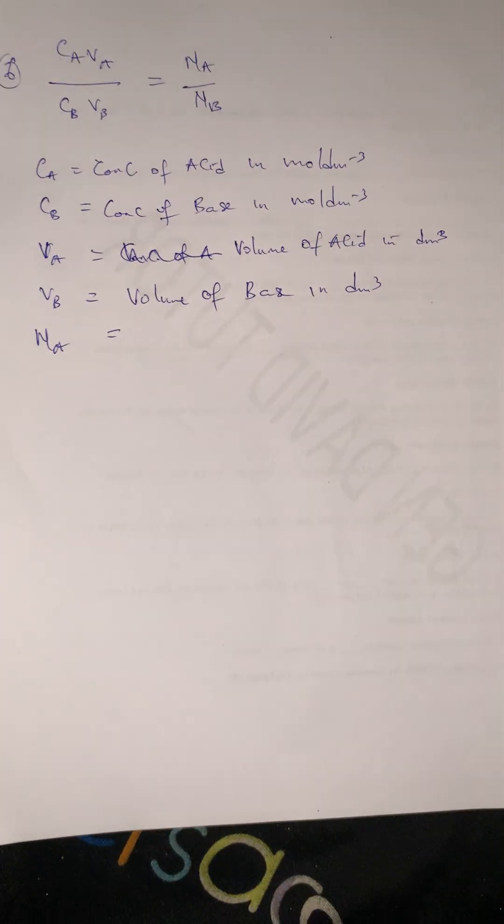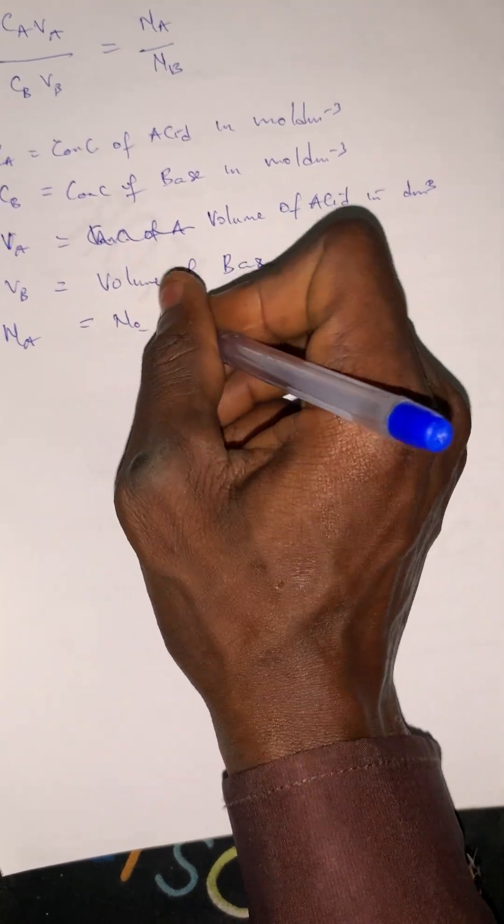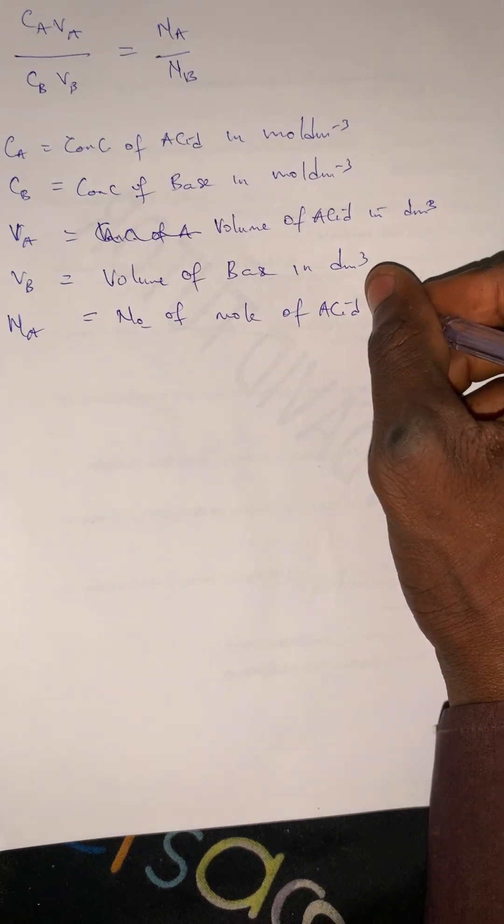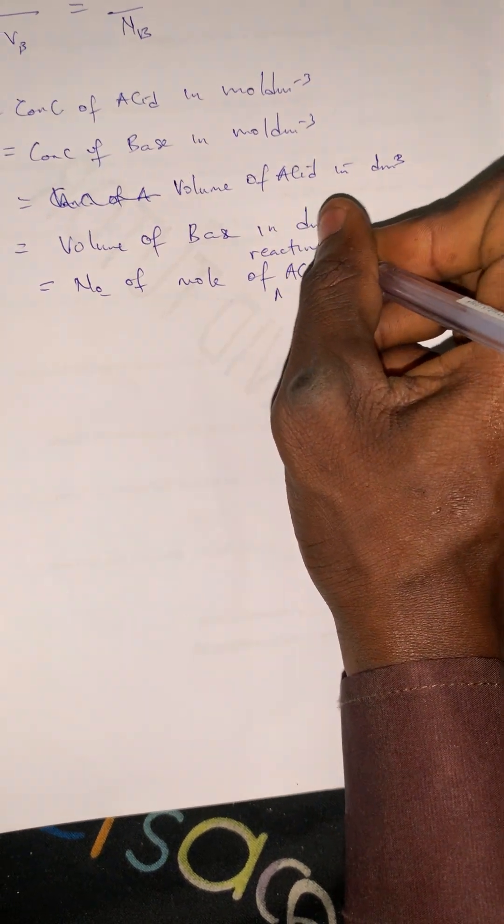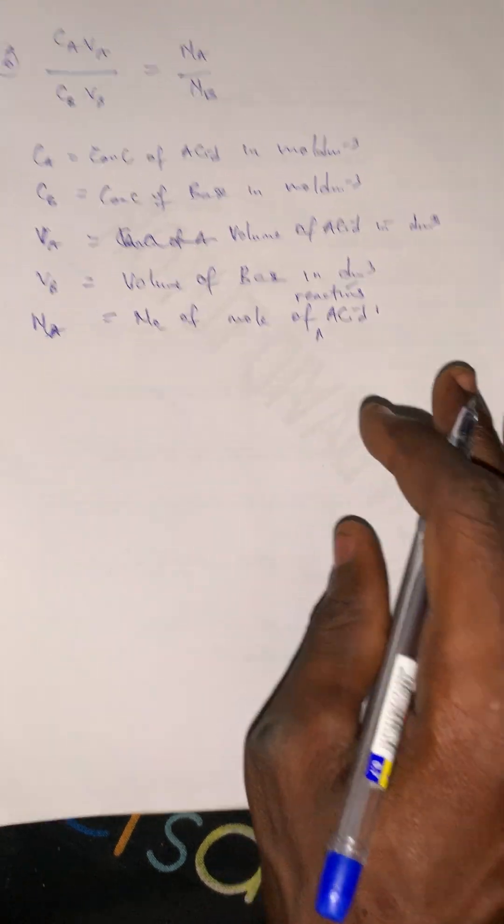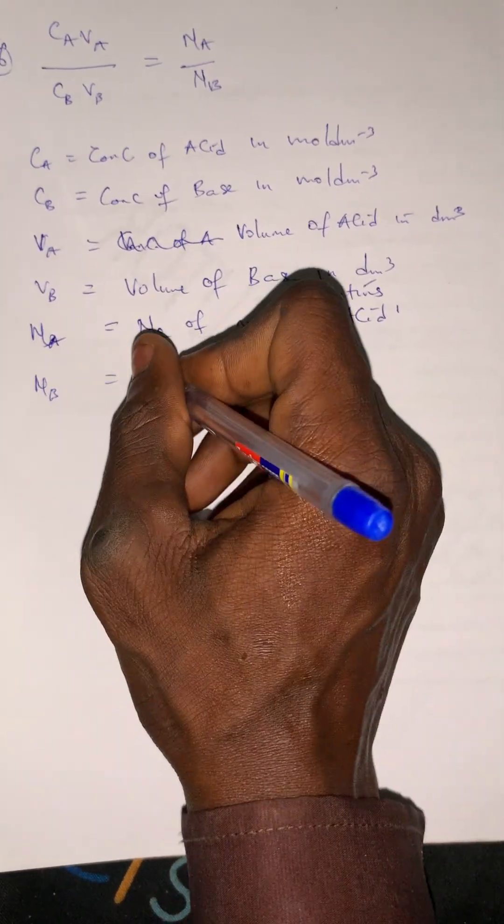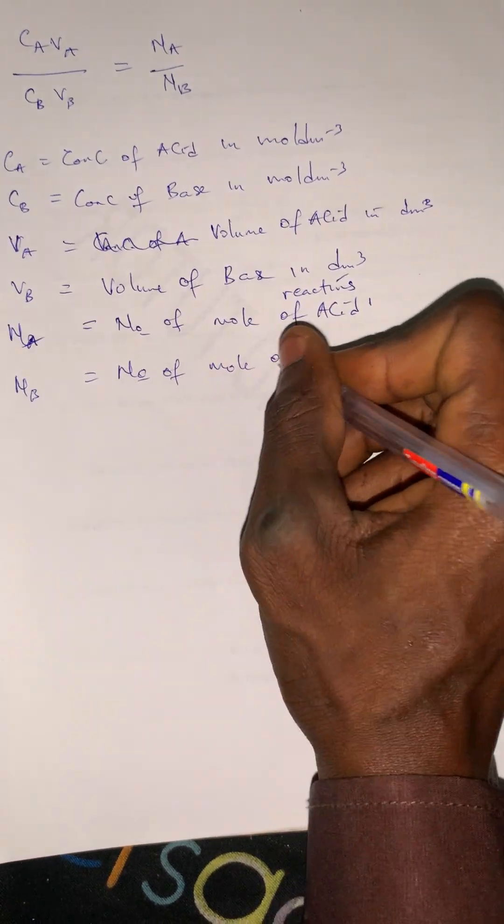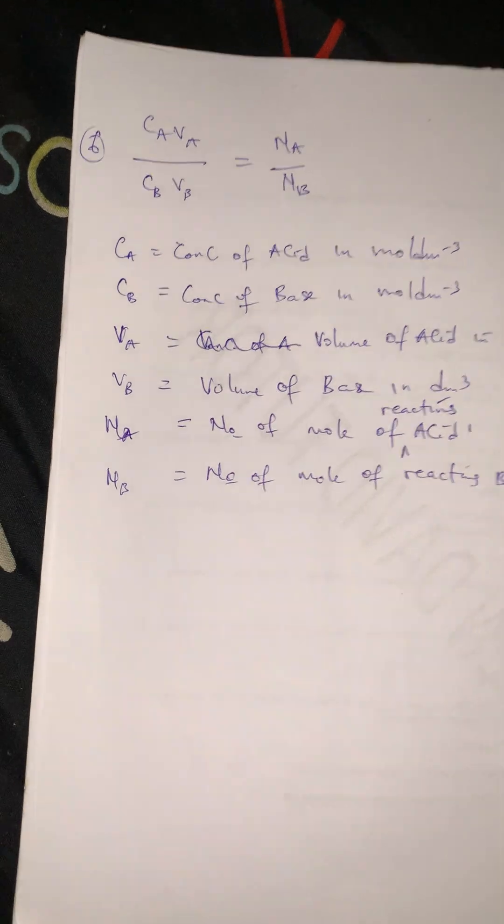NA is the number of moles of acid or number of reacting acid. That is, the number of moles of acid in the reaction. NB is the number of moles of reacting base.